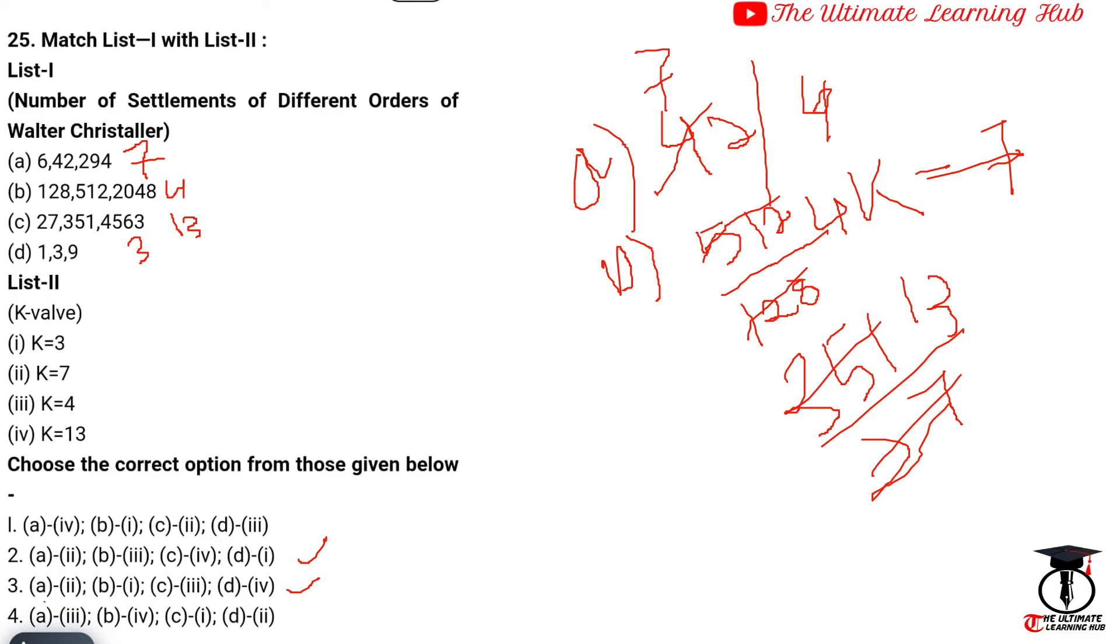Now B is 4, B means option 3, B is connected to 3, which is K4. So B is 3. Now I can get the answer, so 2 is the correct answer.